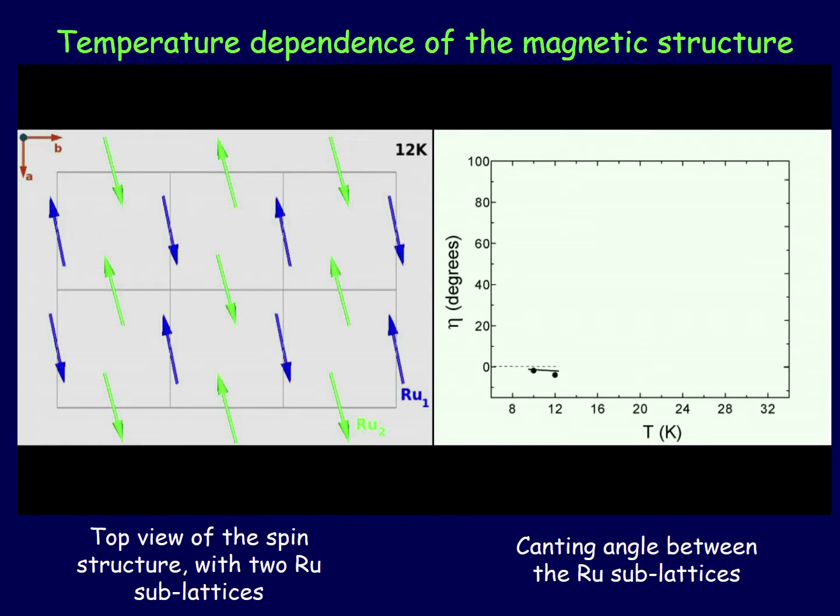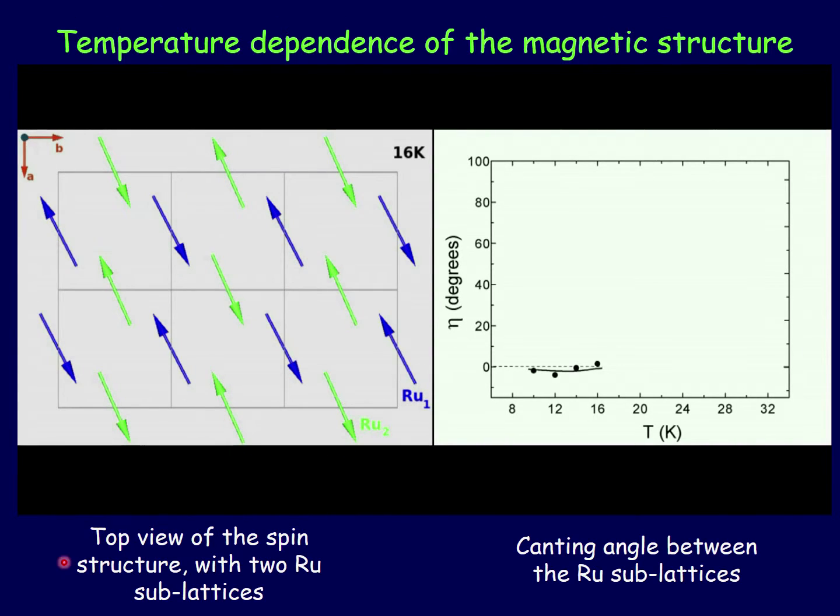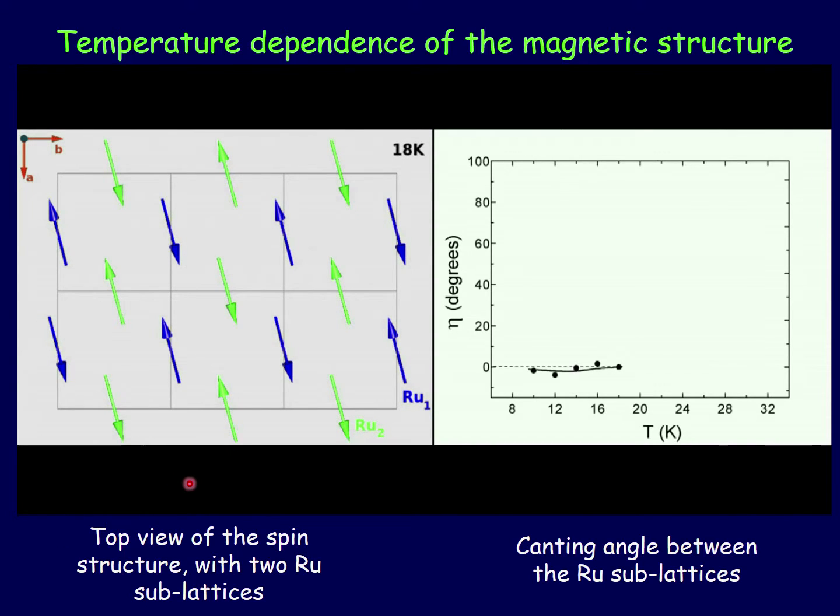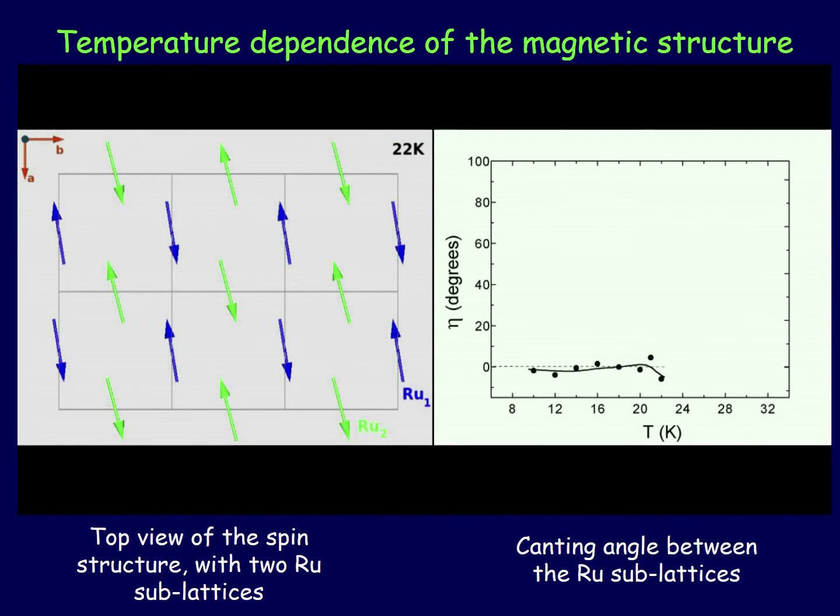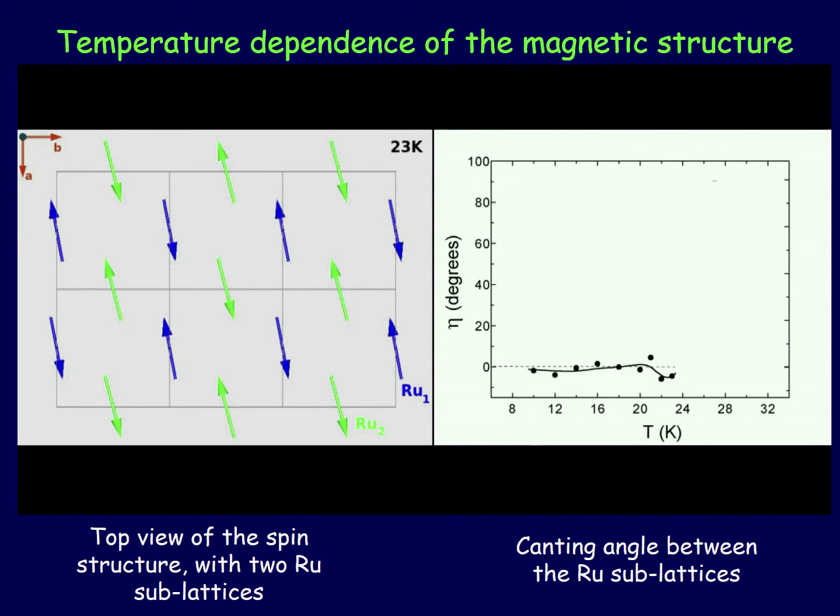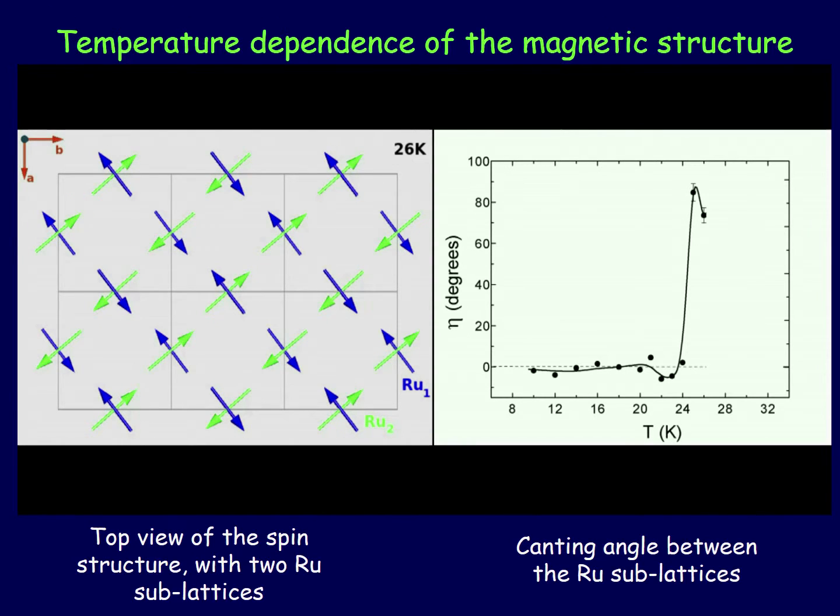Now we are going to see a small video which shows the evolution of the canting angle as a function of temperature. At the top of the picture we can see the temperature. Now we are going to see the evolution of how the canting angle evolves with temperature. At very low temperatures the canting angle is nearly zero.